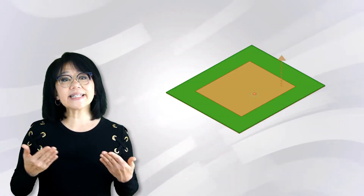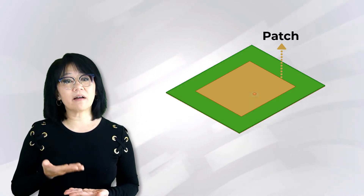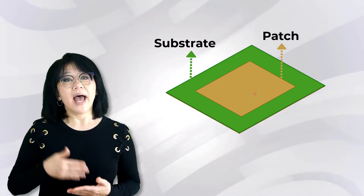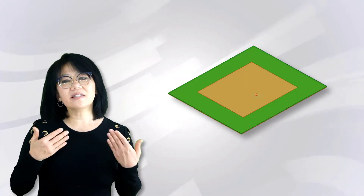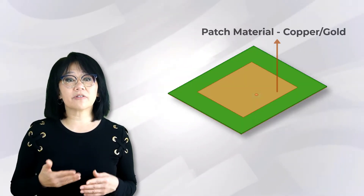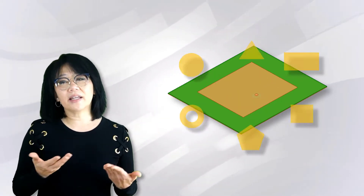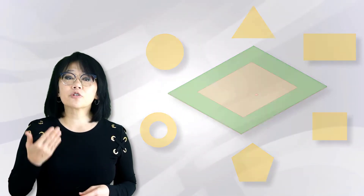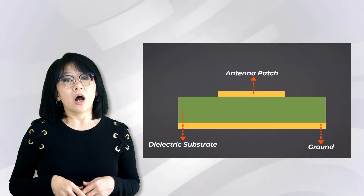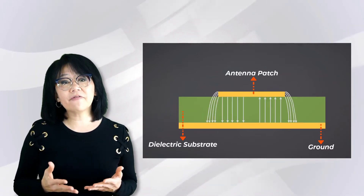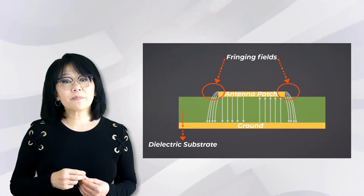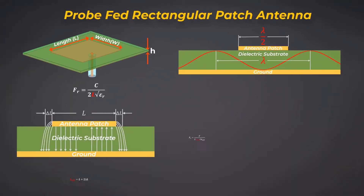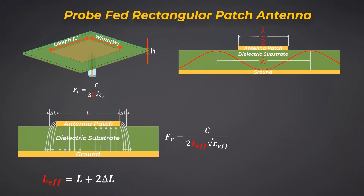In its most fundamental form, the microstrip patch antenna consists of a radiating patch on one side of a dielectric substrate and a ground plane on the other side. The patch is generally made of a conducting material such as copper or gold and can take on any possible shape. The microstrip patch antenna radiates primarily because of fringing fields between the patch edge and the ground plane.